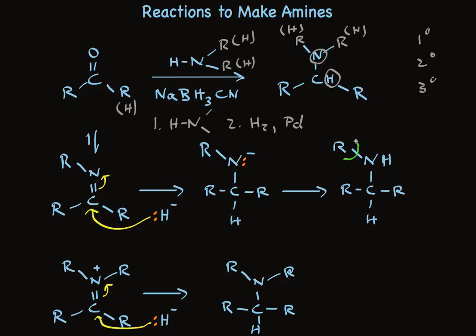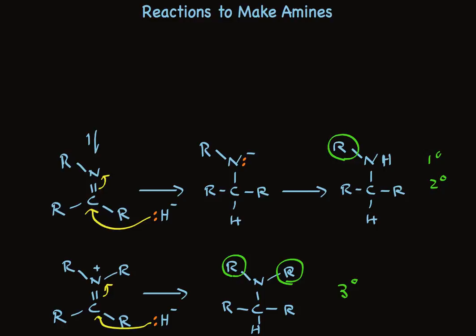You can have just one R group attached to that nitrogen, or even none, if we start with ammonia. Or you can end up with two R groups attached, in which case you just made a tertiary amine. And ammonia makes primary amines, and primary amines make secondary amines in this process.